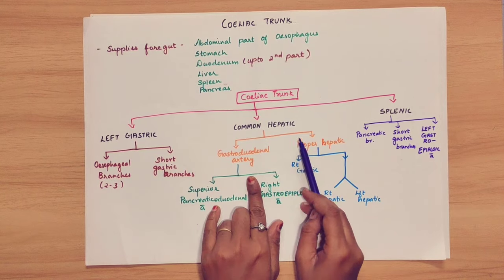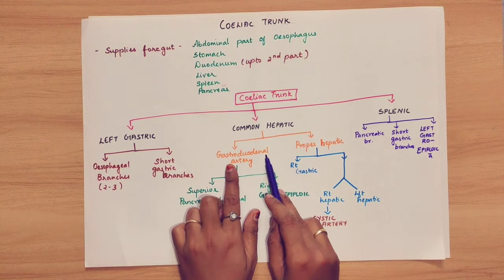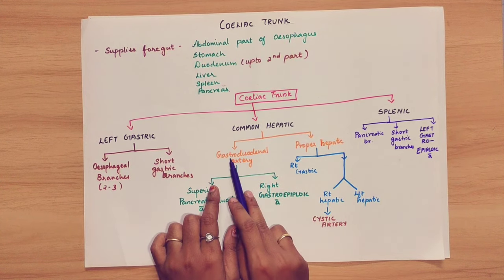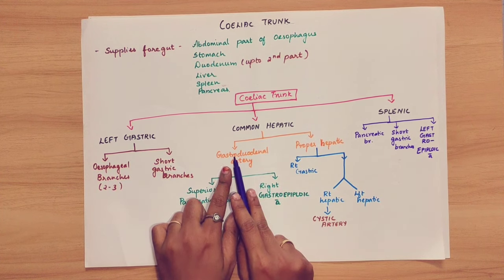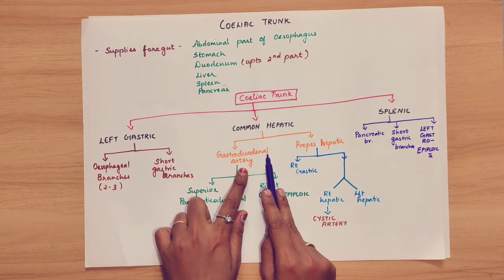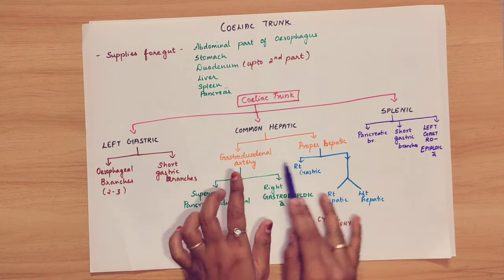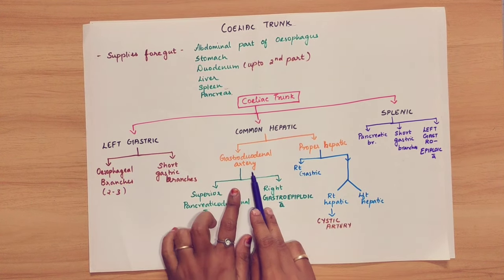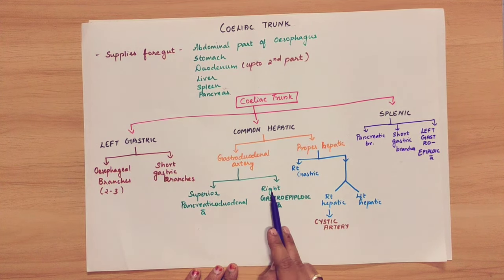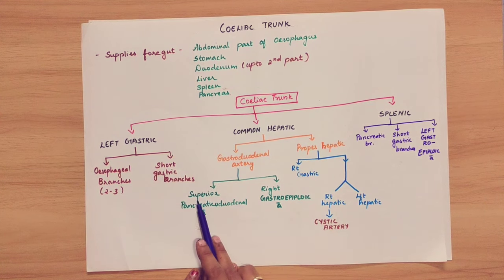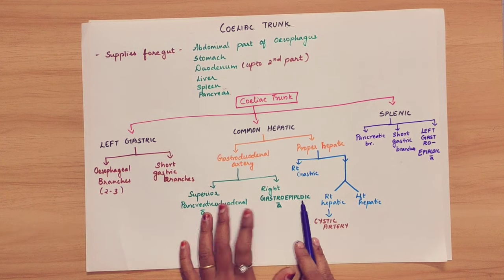Coming to the next artery, that is the common hepatic artery. The common hepatic artery travels toward the right side and is divided into 2 branches. One is the gastroduodenal artery — which supplies the stomach and duodenum. The second is the proper hepatic artery, which goes to the liver. The gastroduodenal artery is divided further into the superior pancreaticoduodenal artery and the right gastro-epiploic artery.